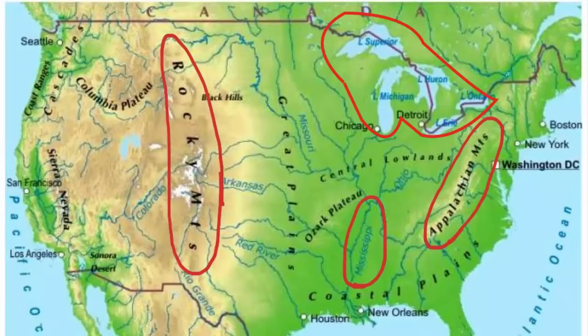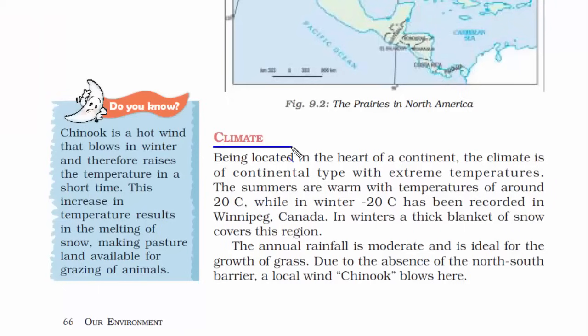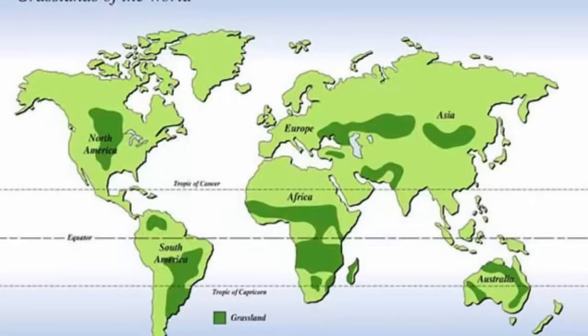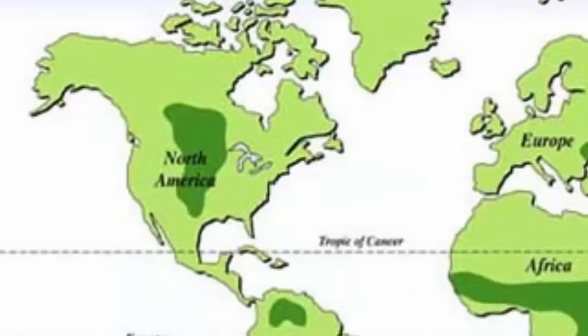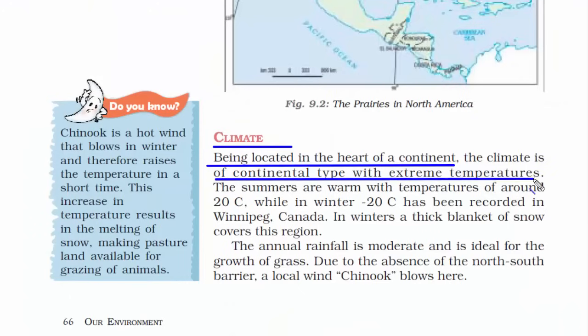This grassland goes all the way to Canada in the north. So the grassland in North America is called prairies — it is right in the middle of the continent and stretches up till Canada in the north. Since this grassland is located in the middle of the continent, it's in the heart of the continent, so the climate is of continental type with extreme temperatures.